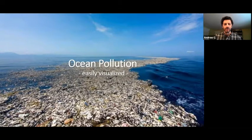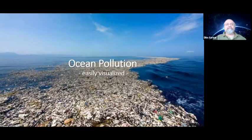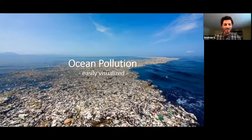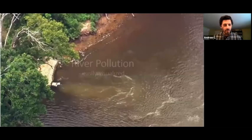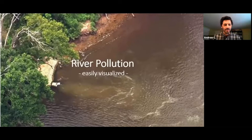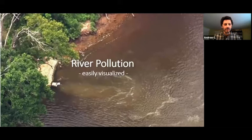Here we see some ocean pollution. Many of us have seen this before — this is the Pacific Great Garbage Patch. This is easily visualized. If we want to address this problem, it's critical that we can at least visualize what it is. Same goes for river pollution — you see this discharge, an outfall from some plant discharging polluted water. Again, easily visualized, a necessity when developing a strategy to address this kind of problem.